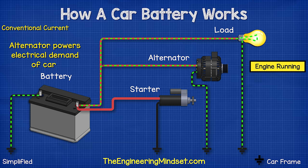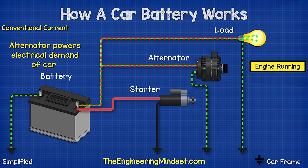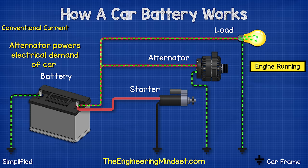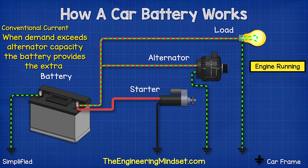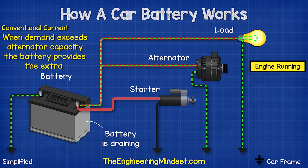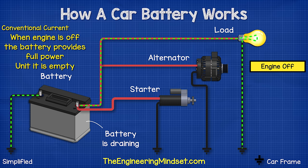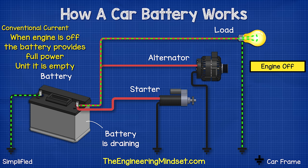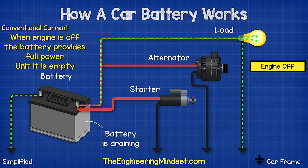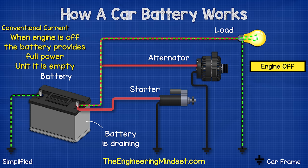When the demand for electricity in the car exceeds what the alternator can provide, the battery will provide this additional power, which again drains the battery. If the engine is switched off, the alternator stops rotating and recharging the battery, so the battery will provide the full electrical power to the car until it's dead.